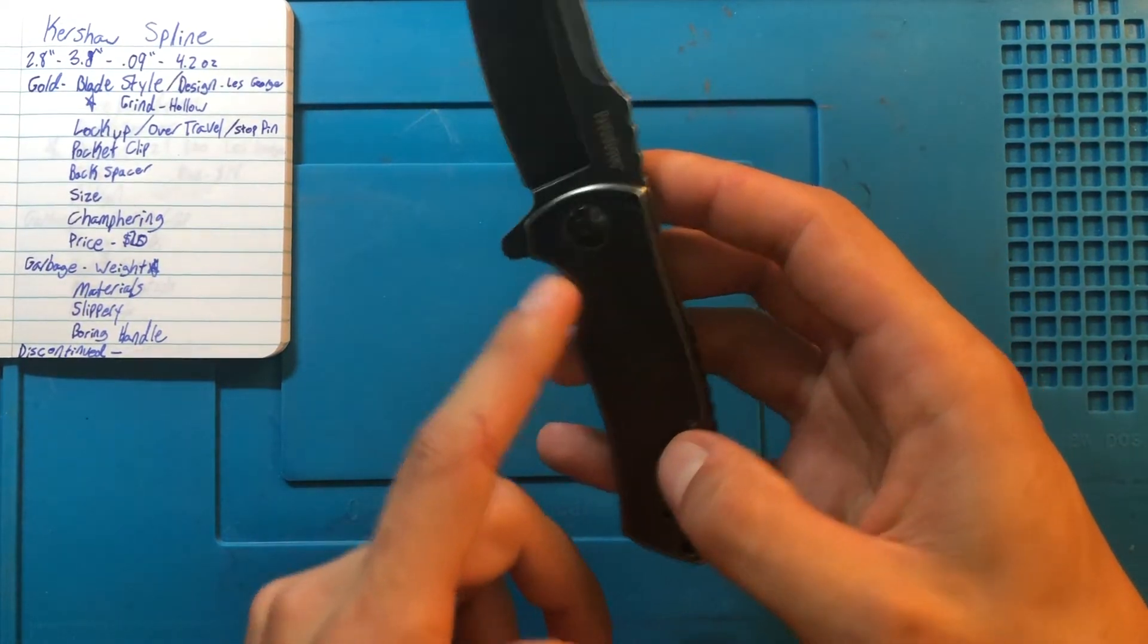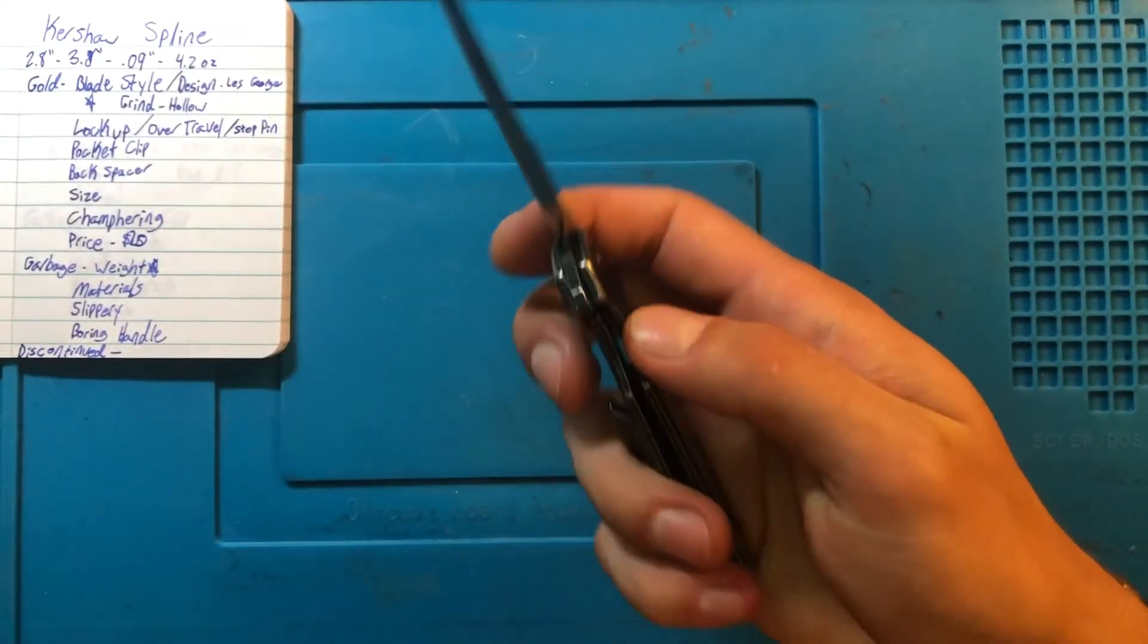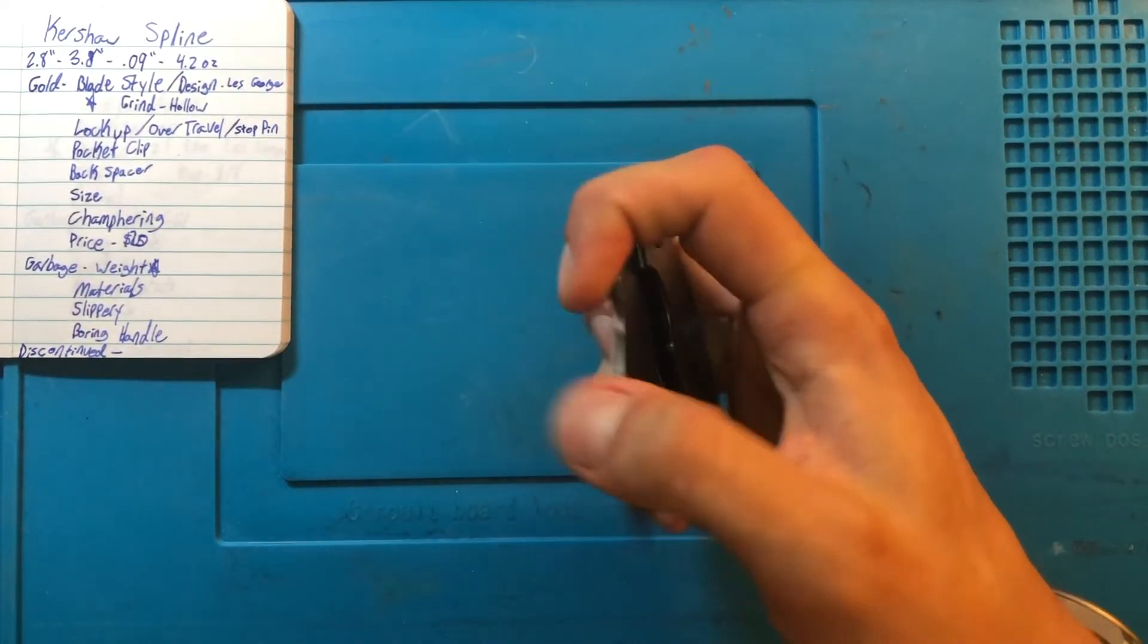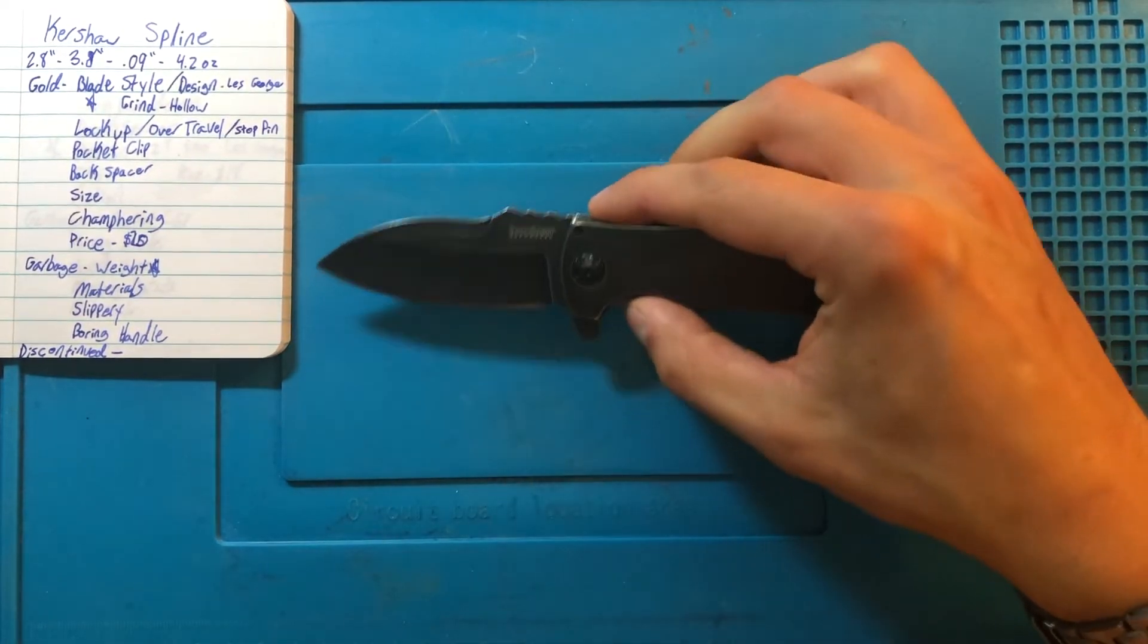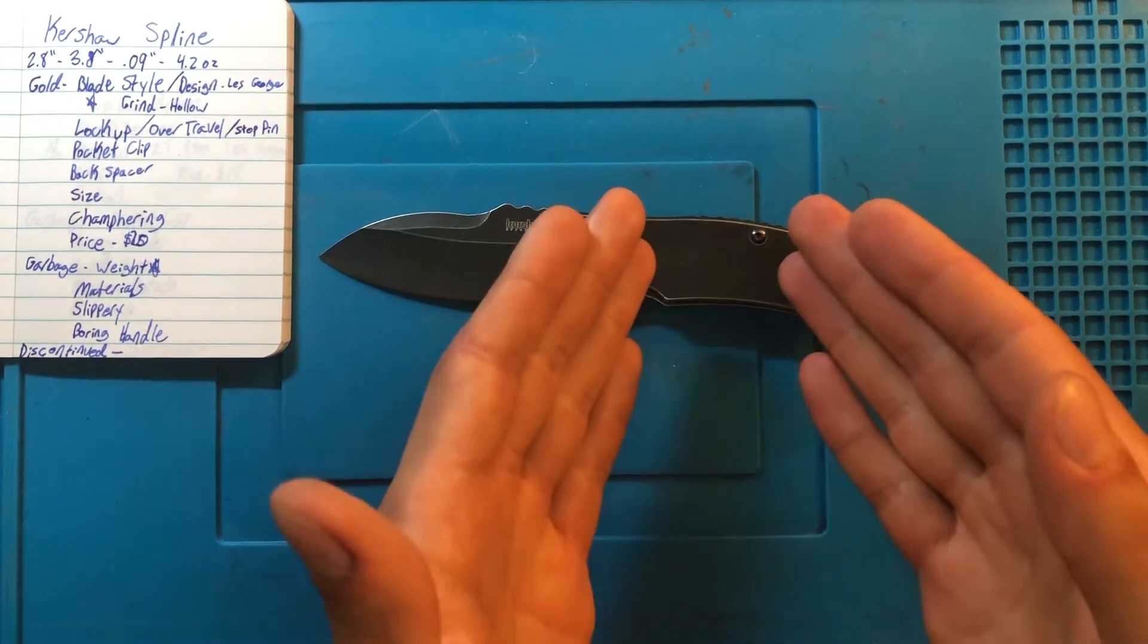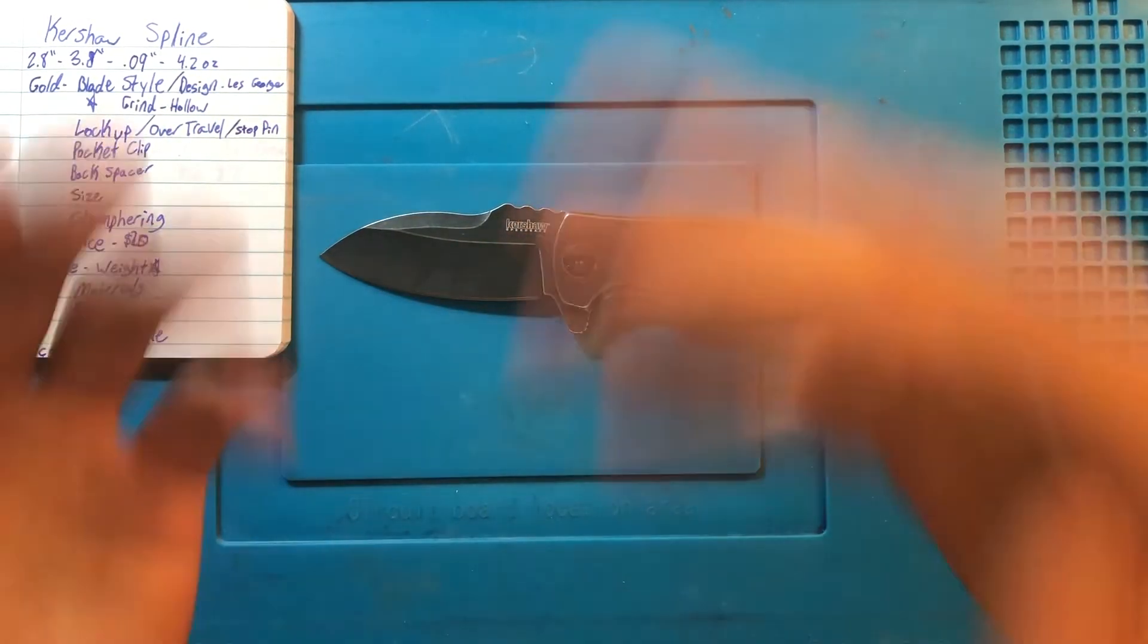Going back to the lock bar, I forgot to mention this earlier, but there is plenty of cutout, so that part, at least, is excellent. Get your thumb in there, no problem. And it is entirely possible that all of the money that would have been spent on CNCing the handle and putting texture and design in there went to chamfering the whole thing, in which case, well, I guess that's a wash.